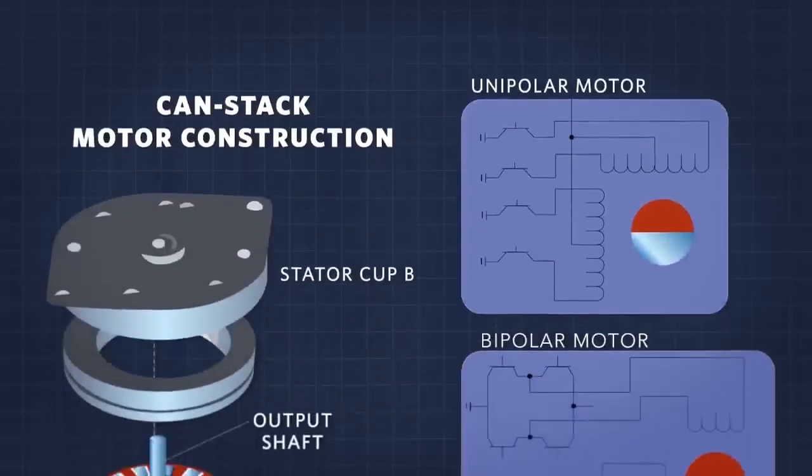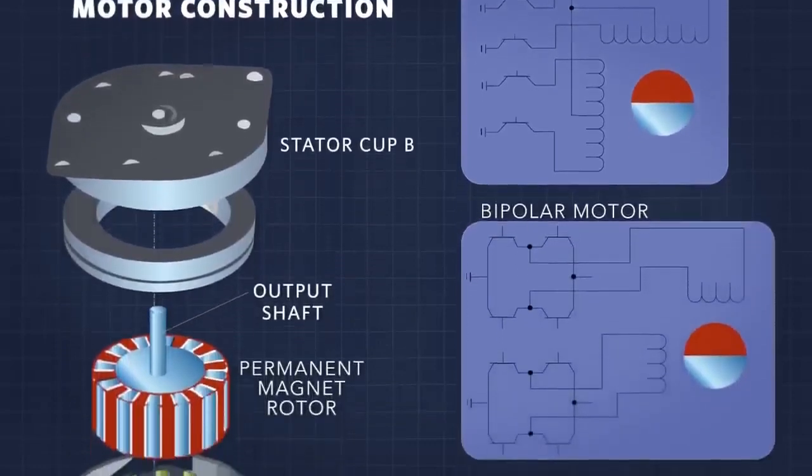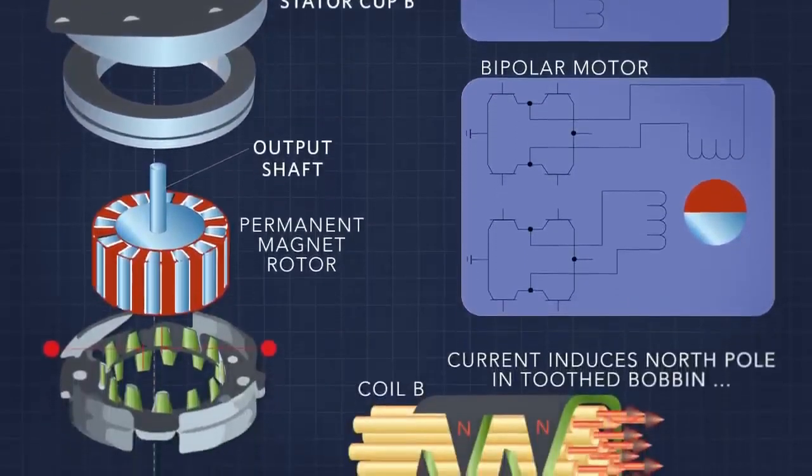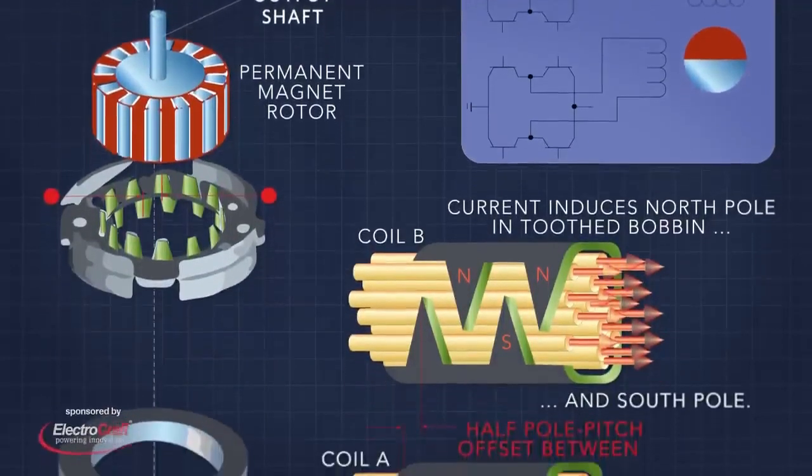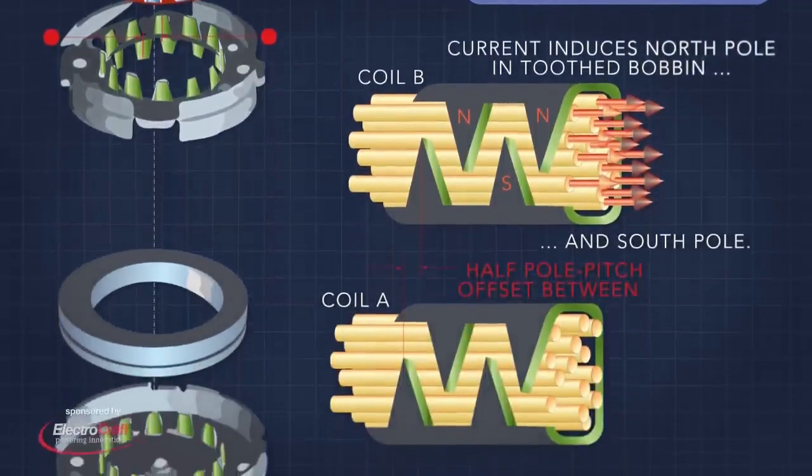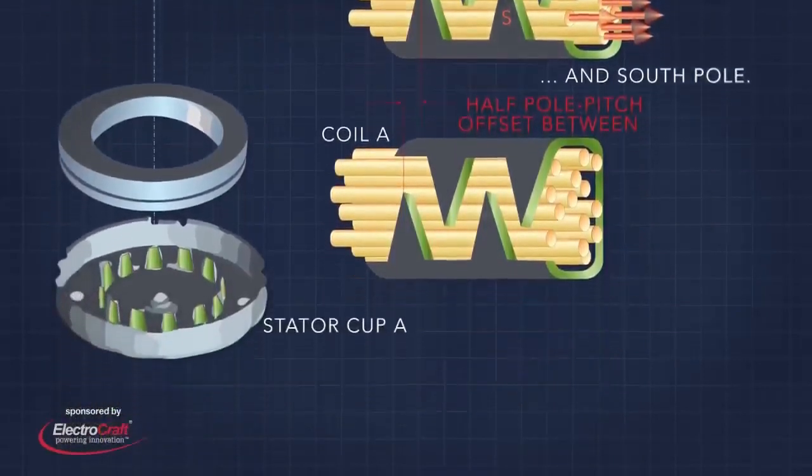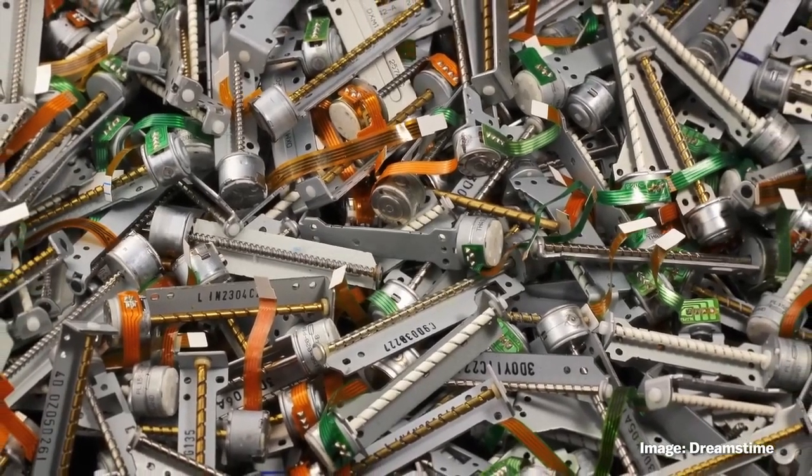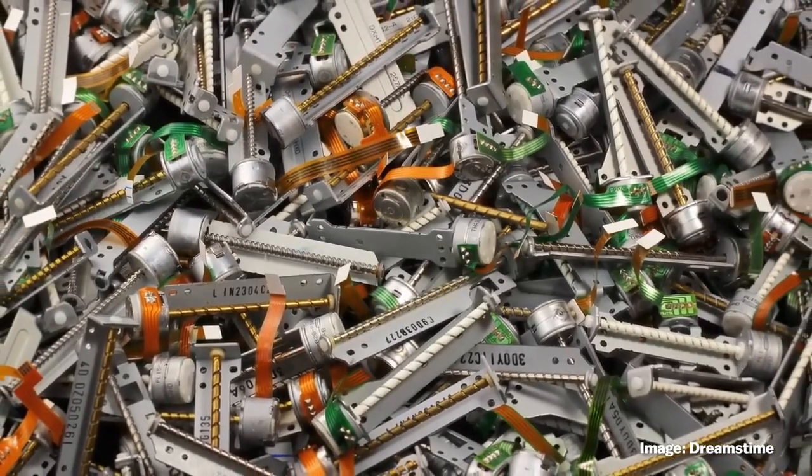The term permanent magnet stepper motor often implies a motor with a can stack, sometimes called claw tooth or tin can construction, built for cost-effectiveness to suit consumer-grade appliances. Punch sheet metal parts form toothed or clawed cups surrounding coils. The rotor has an array of permanent magnets and the same number of pole pairs as the coils. As in all stepper motors, can stack motors run off electrical pulse trains to output mechanical movement.